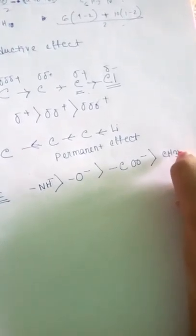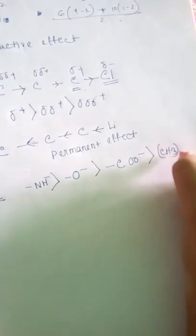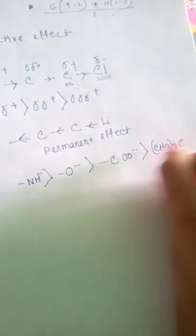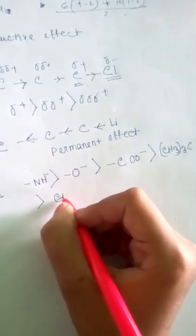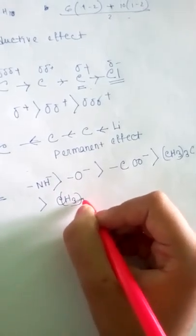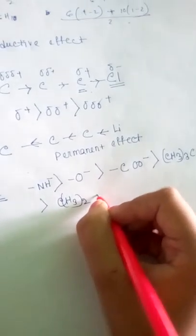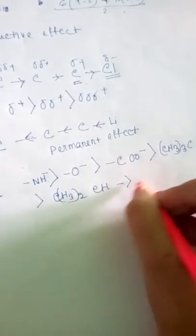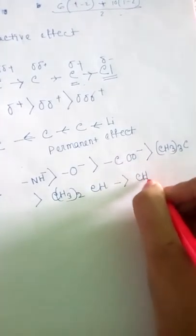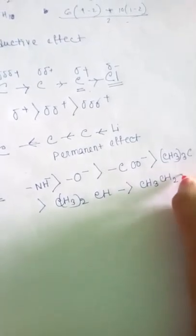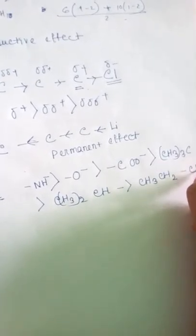For plus-I effect, the alkyl groups are: CH3 — three carbons; CH3 — two carbons with C and H; CH3, CH2, CH3; and CH3, CH3.